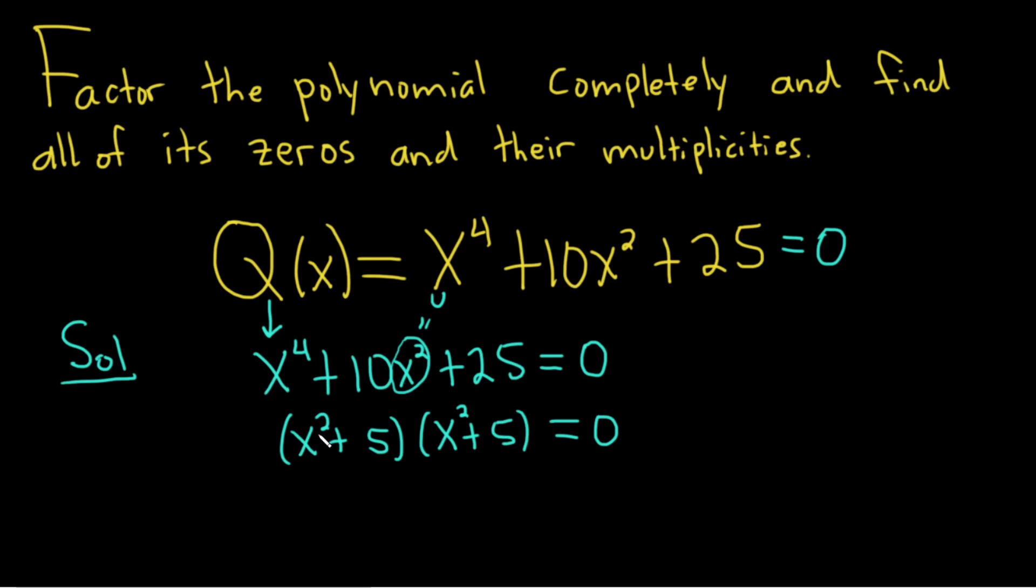Because if you multiply this out, x squared times x squared is x to the fourth. The middle term, 5x squared, inner and outer, 5x squared plus 5x squared gives us 10x squared. And then 5 times 5 gives you 25. So it checks completely.